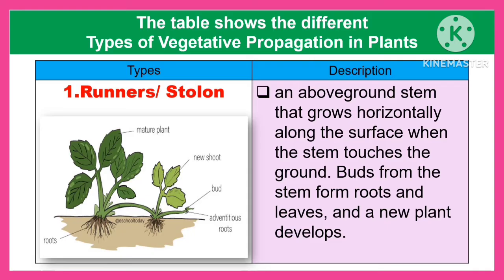The first type is runners or stolon. It is an above-ground stem that grows horizontally along the surface. When the stem touches the ground, buds from the stem form roots and leaves, and a new plant develops.